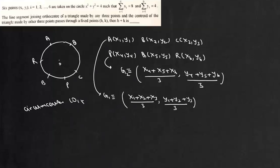So circumcenter is at 0, 0 and we know that O, G and H, they are collinear and G divides O, H in the ratio 1 is to 2.